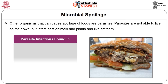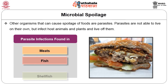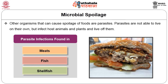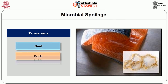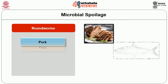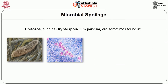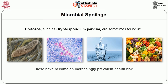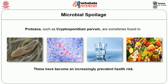Other organisms that can cause spoilage of foods are parasites. Parasites are not able to live on their own but infect host animals and plants and live off them. Parasite infections are typically found in meat, fish, and shellfish. Tapeworms are found in beef, pork, and fish. Roundworms are sometimes found in pork, fish, and shellfish. Protozoa such as Cryptosporidium parvum are sometimes found in drinking water, fruits, and vegetables, and have become an increasingly prevalent health risk.